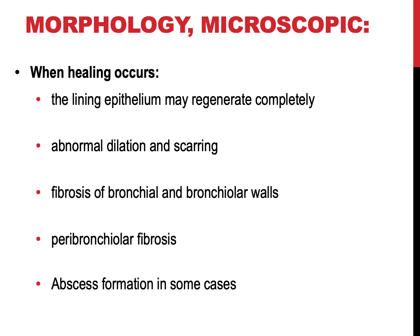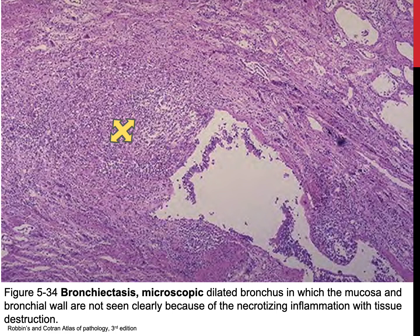Chronic cases may have fibrosis of the bronchial and bronchiolar walls and peribronchiolar fibrosis. In some cases, necrosis destroys the bronchial and bronchiolar walls, producing an abscess cavity. This figure shows the histologic findings in bronchiectasis. At the center of the figure, there is extensive necrotizing inflammation to the degree that the mucosal lining cannot be appreciated — it is mostly desquamated.